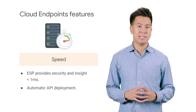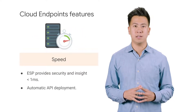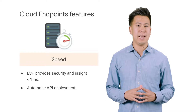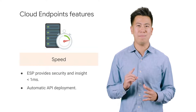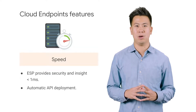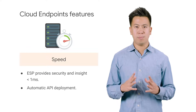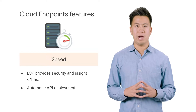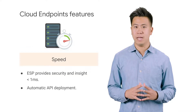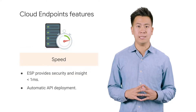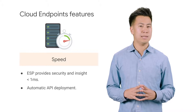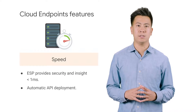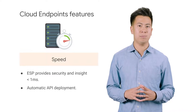The extensible service proxy delivers security and insight in less than one millisecond per call. You can deploy your API automatically with App Engine and Google Kubernetes Engine, or add Google's proxy container to your Kubernetes deployment.